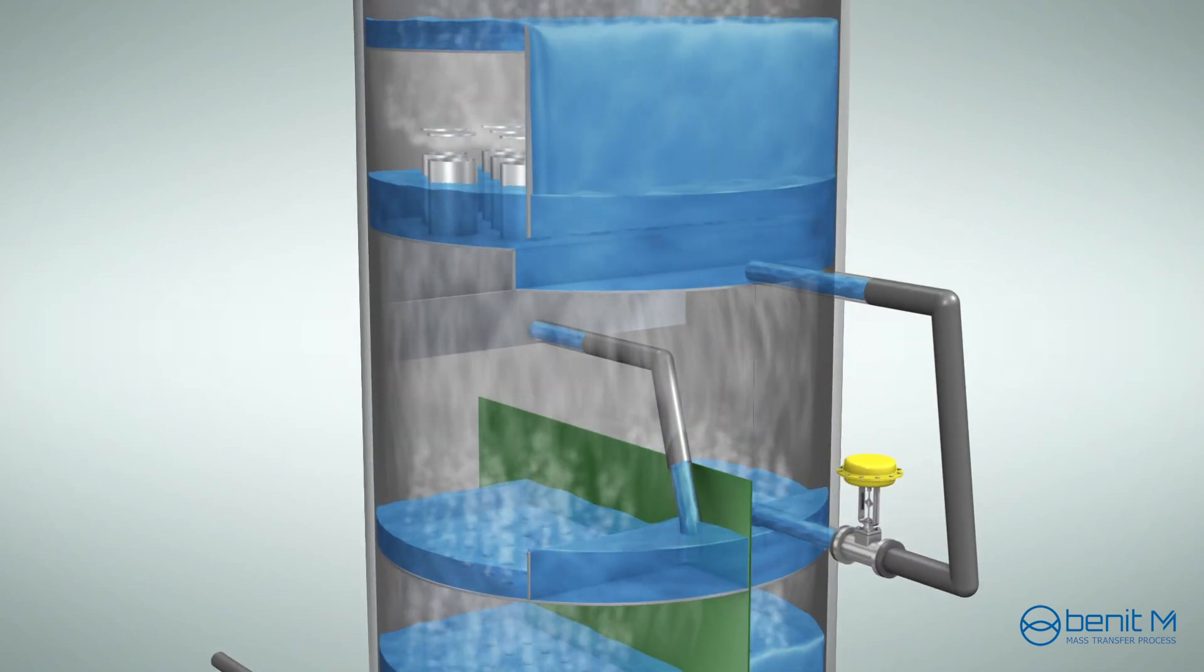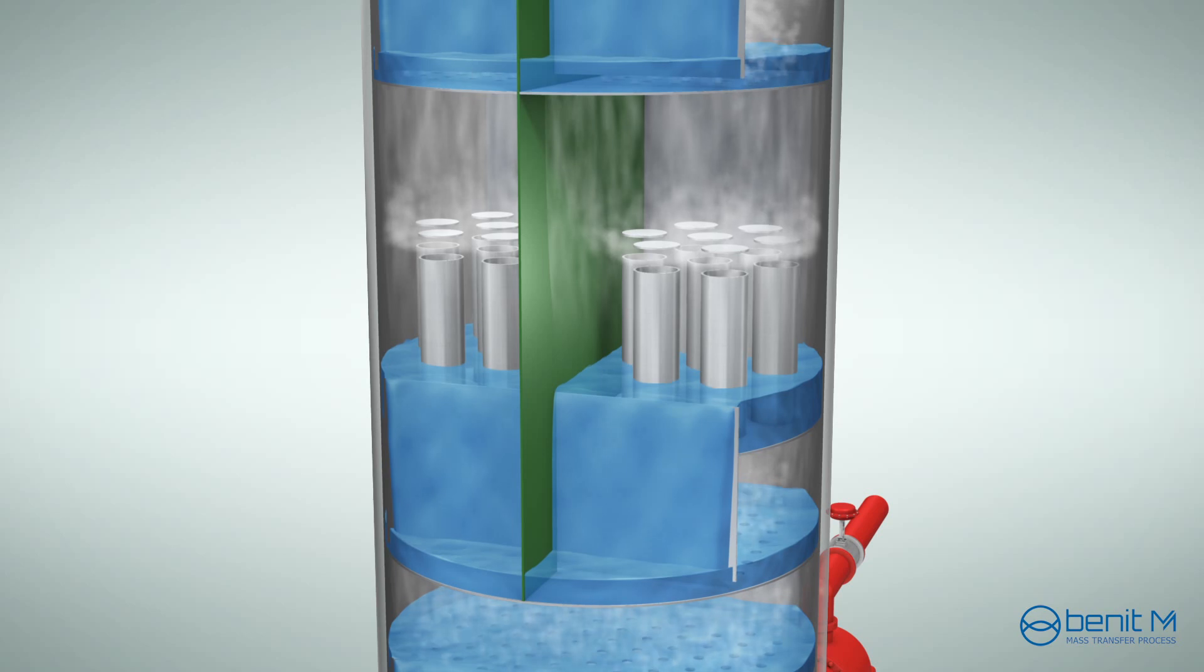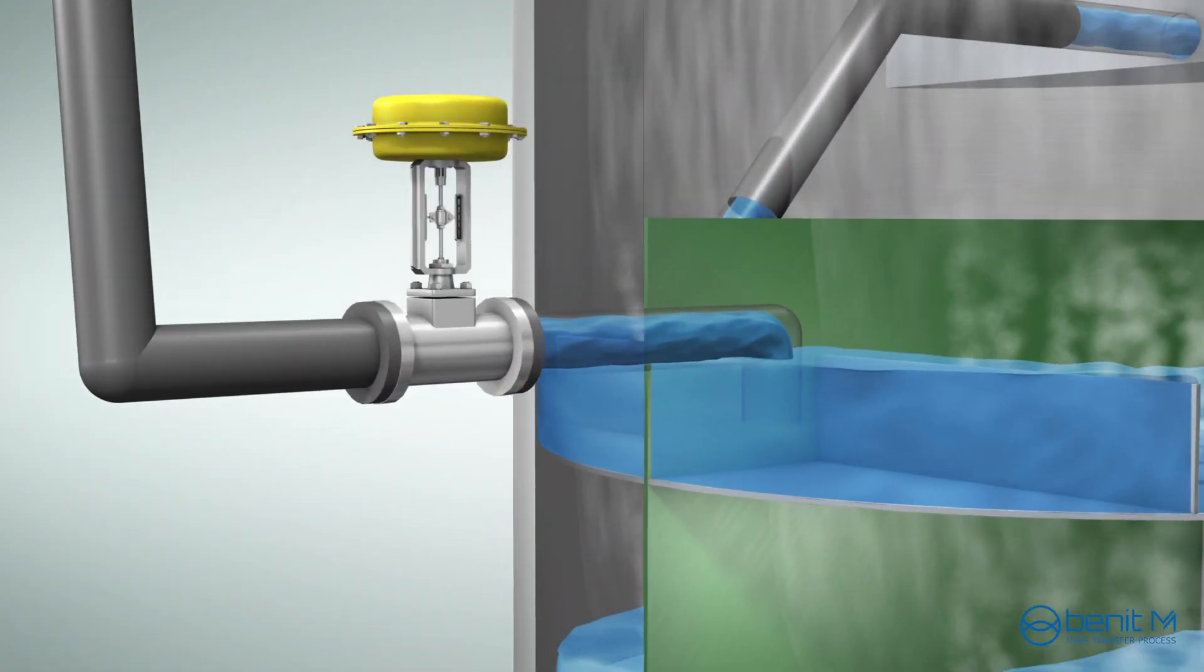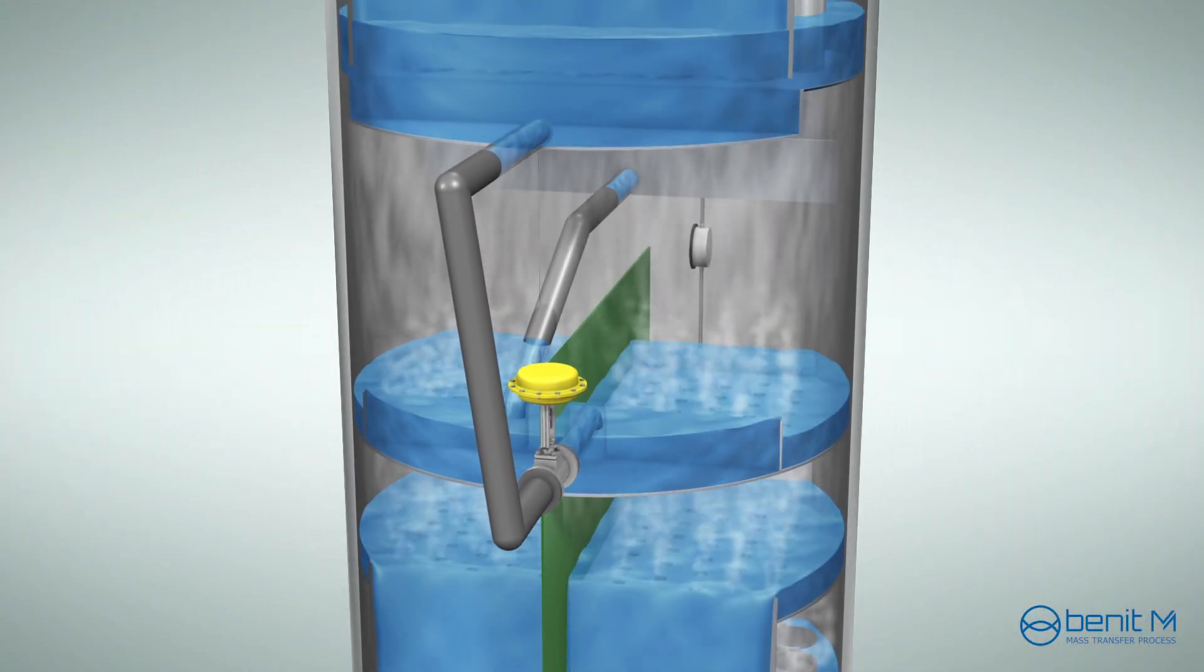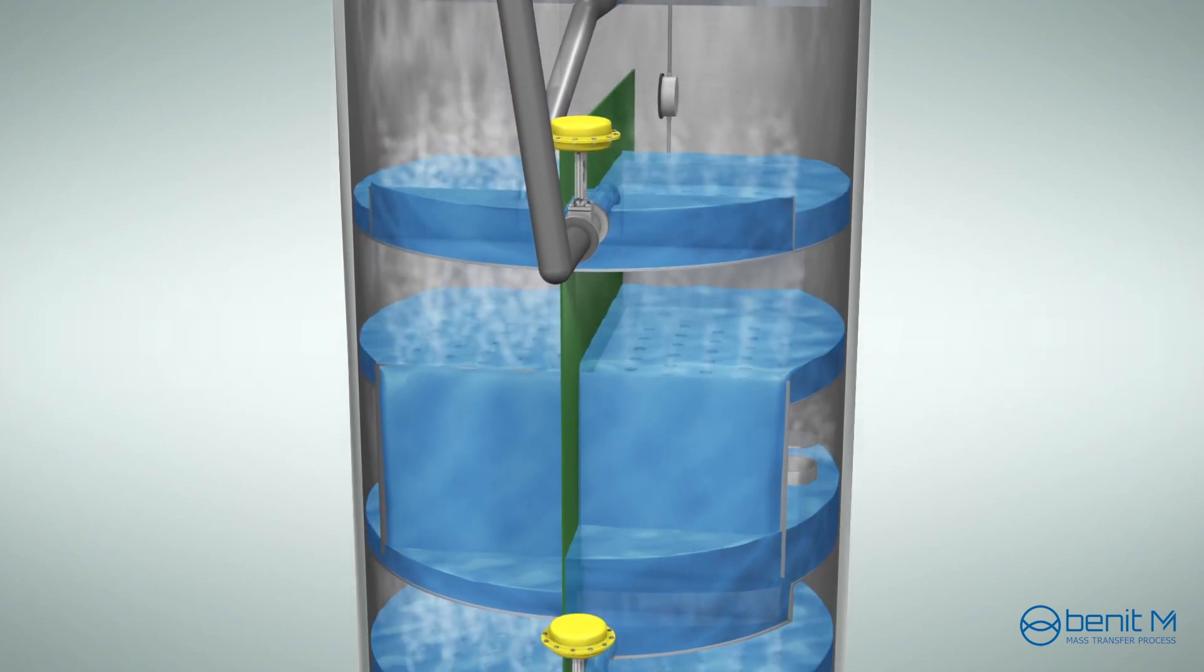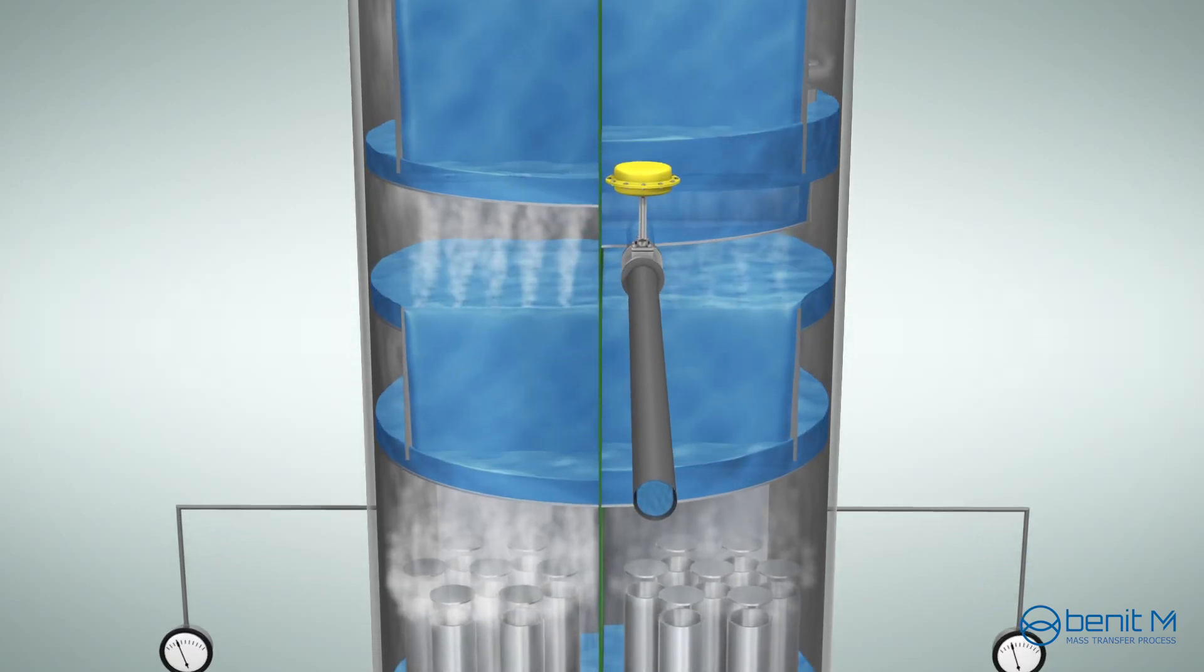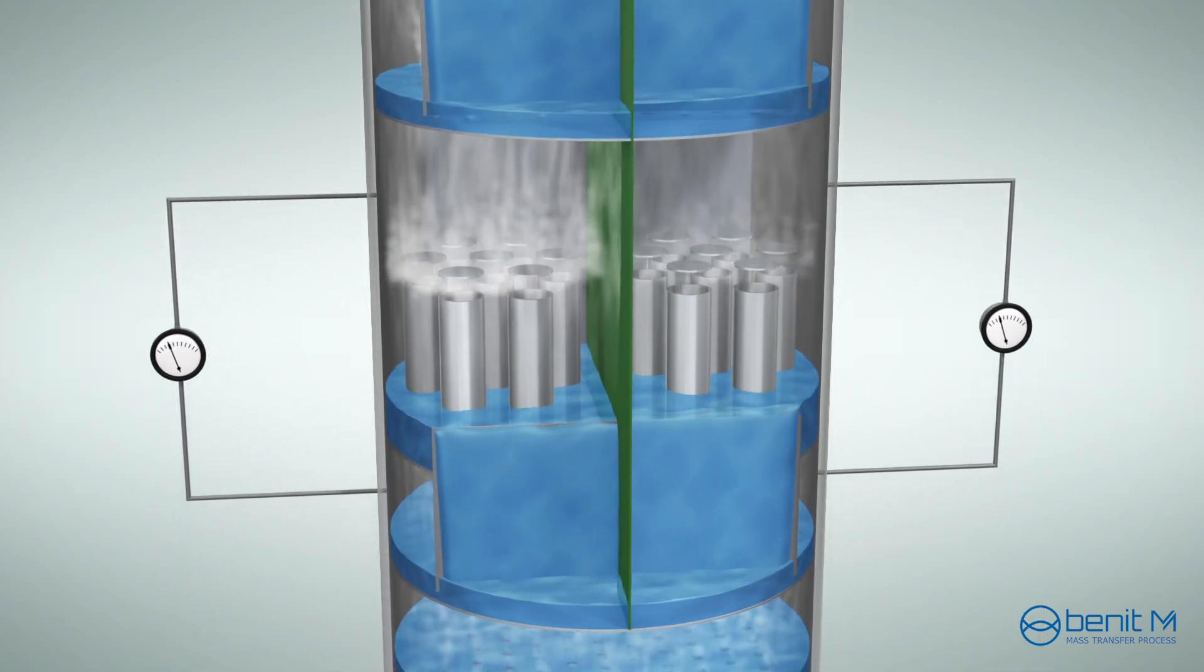When any operating conditions are changed, both liquid split ratio and vapor split ratios need to be tuned to maintain the desired performance. Operator can adjust the liquid split ratio as dividing wall columns are normally equipped with an active liquid splitter. When the liquid load increases in main fractionation section, the liquid load in pre-fractionation section is decreased because the total reflux rate remains the same.